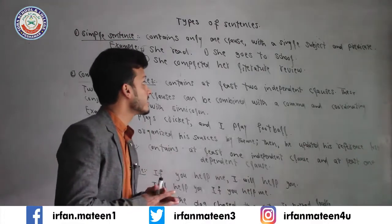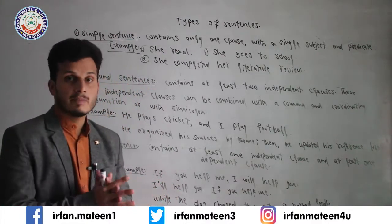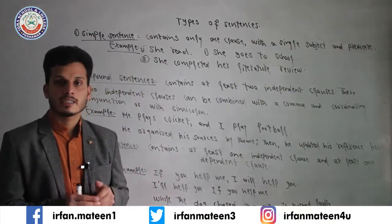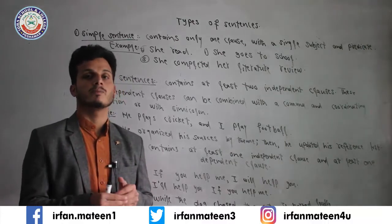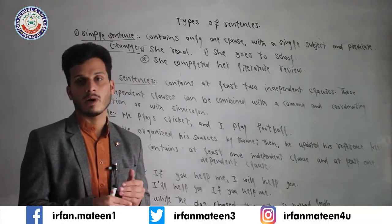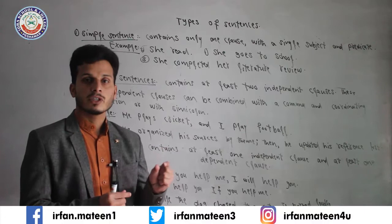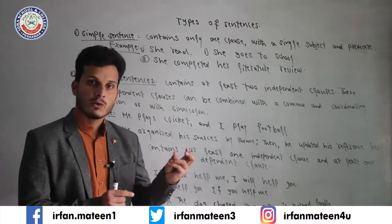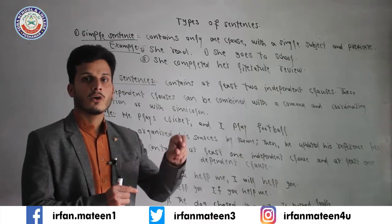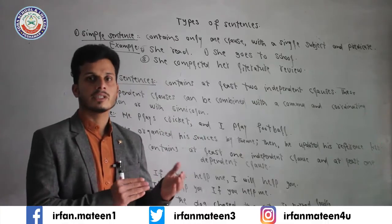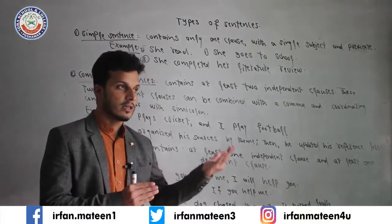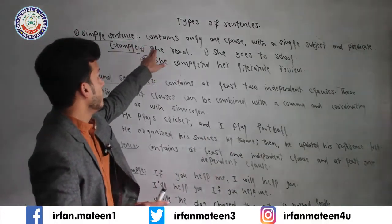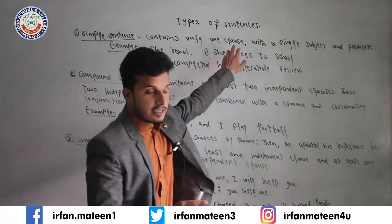So what is a simple sentence? Simple sentence mein yeh hota hai ke is mein siraf ek clause hota hai. Aur is clause ke liye jo minimum requirement hai, us mein subject aur verb ka hona zaroori hai. To isi tarah simple sentence mein subject aur predicate hota hai — yani subject, verb and object — must hoga. It contains at least one clause.